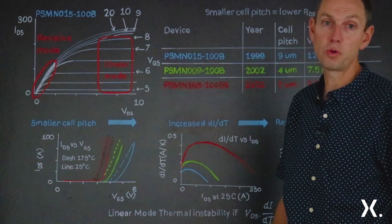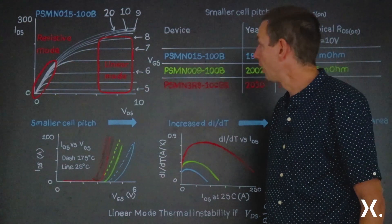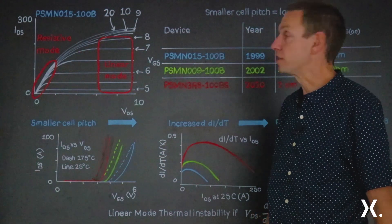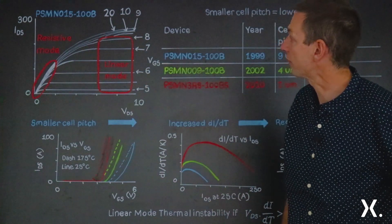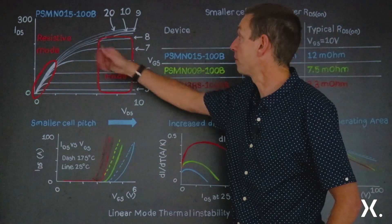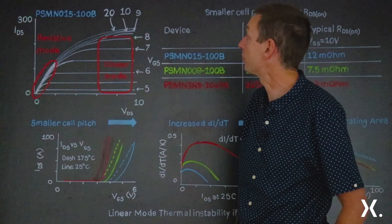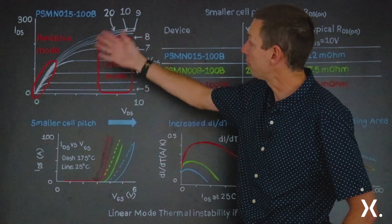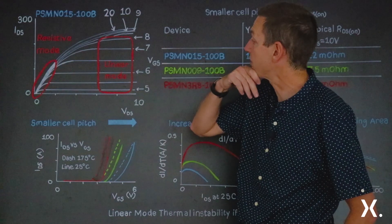So first of all, what is linear mode? To describe what linear mode is, we want to consider the output characteristics for a typical MOSFET — an Nexperia MOSFET, the PSMN015-100B. We've got the output characteristics here in the top right.